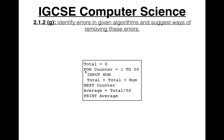Here's what the corrected code should look like: `total = 0`, then `for counter = 1 to 50`, `input num`, `total = total + num`, `next counter`, `average = total / 50`, `print average`. It's good to get practice with this — search for other past papers and try these questions, because error identification is always asked in the exam.